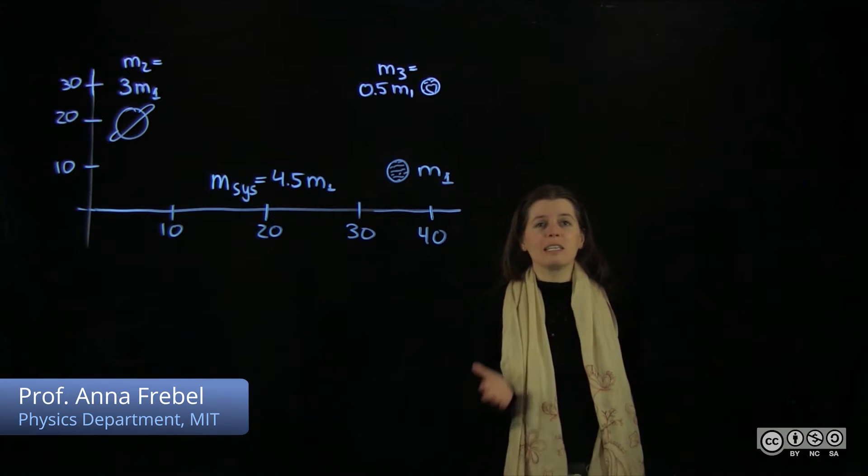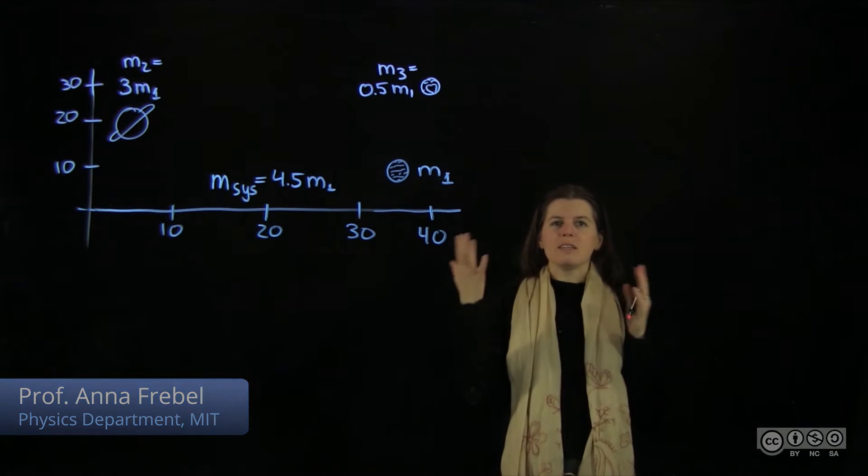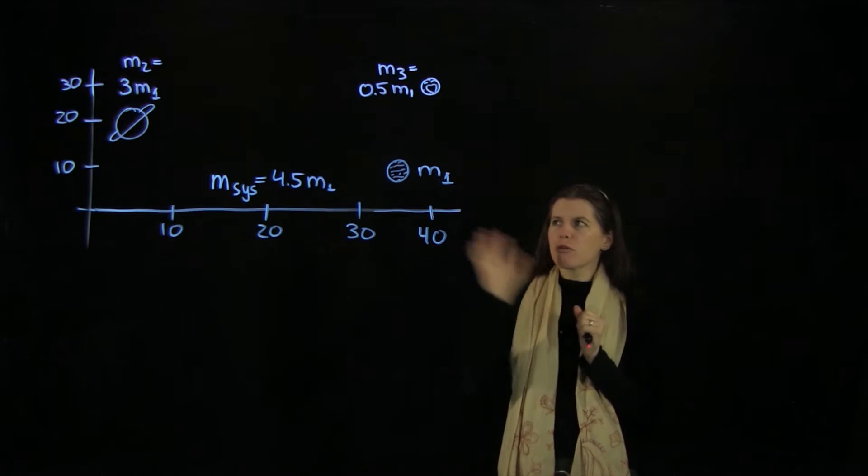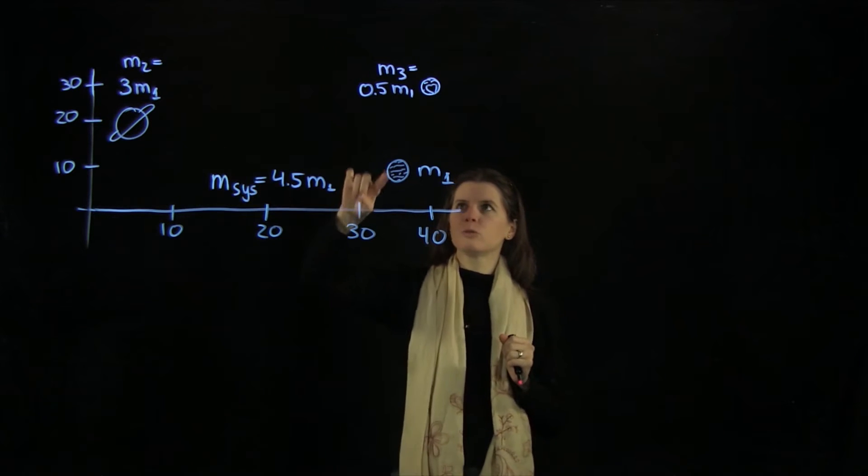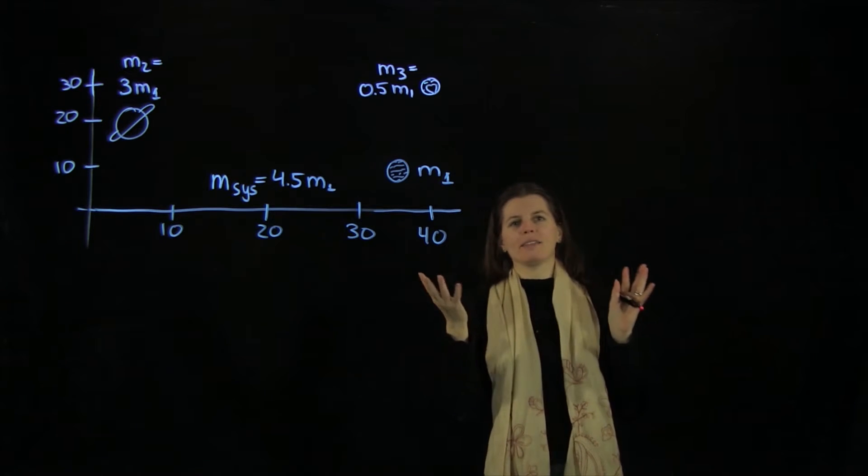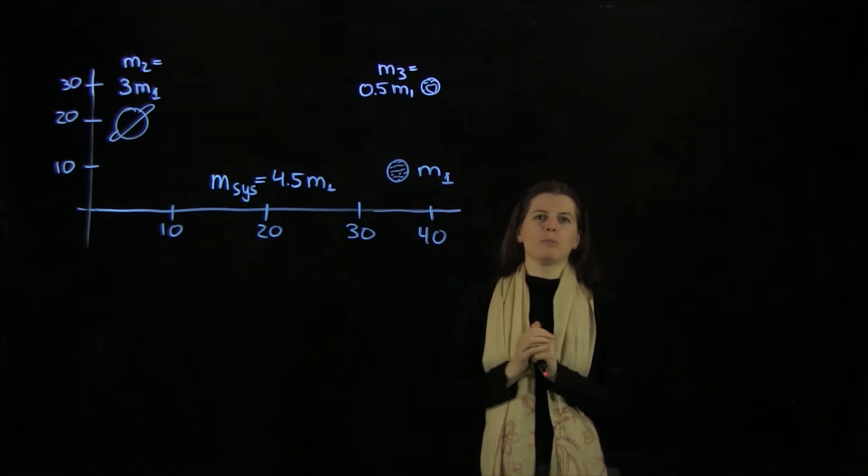The Little Prince is sitting on his little planet watching planets go by. Suddenly he's seeing three of them: one, two, three. He wonders what would the center of mass of these three planets be? So let's calculate it.